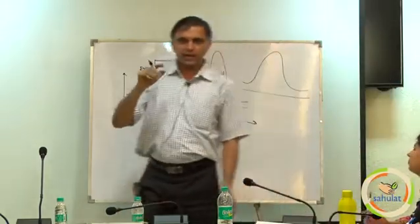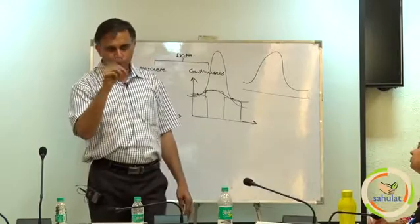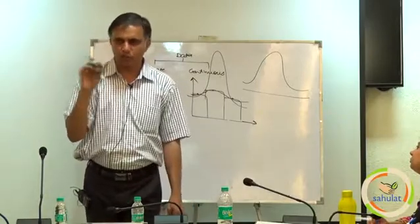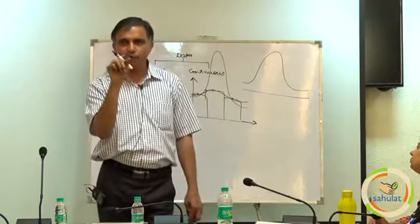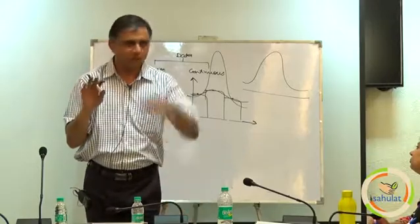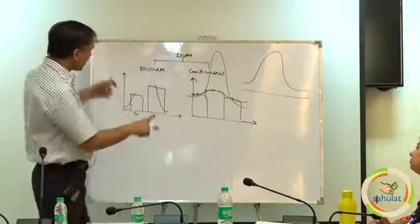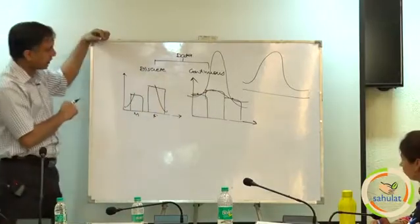You look for, if I ask maybe your age, if you noted down the question, discrete series question, x and f, 15, 16, 17. There is no 15.1 allowed, either 15 or 16. That means, it is discrete, it is continuous, one.